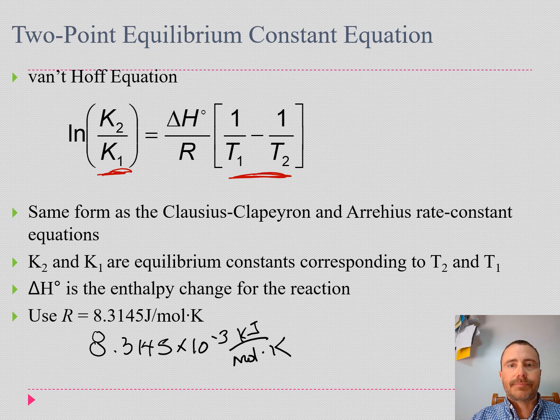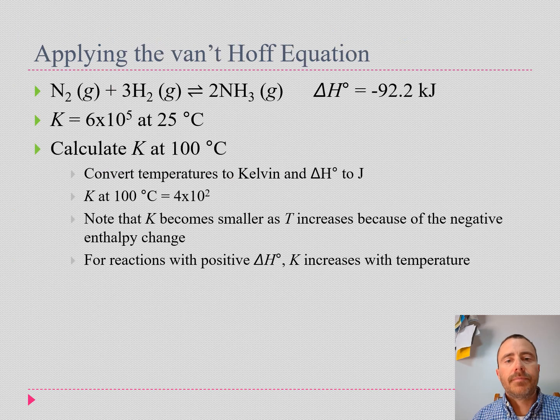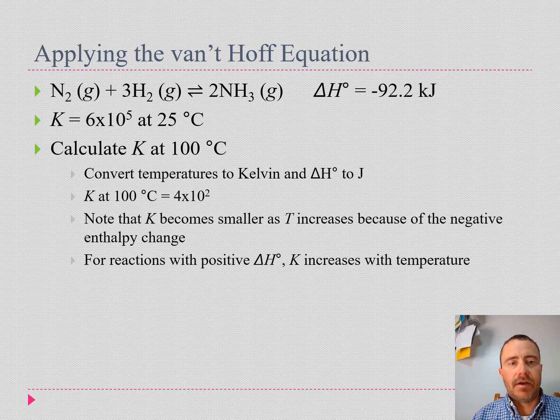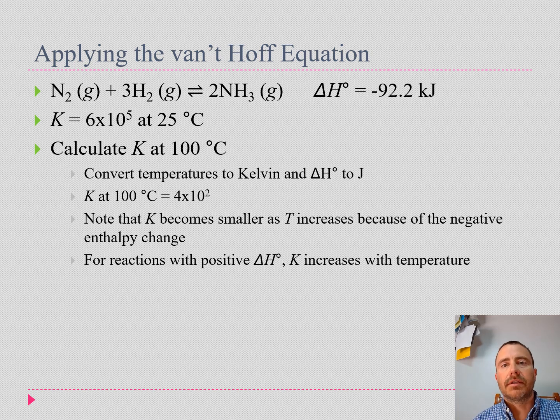Some general ideas about the van't Hoff equation are shown here with our nitrogen and hydrogen coming to equilibrium with ammonia. We've got our enthalpy change for that is negative 92.2 kilojoules, so this is an exothermic reaction.